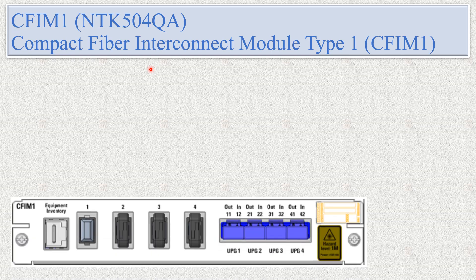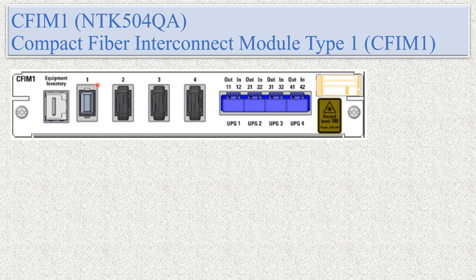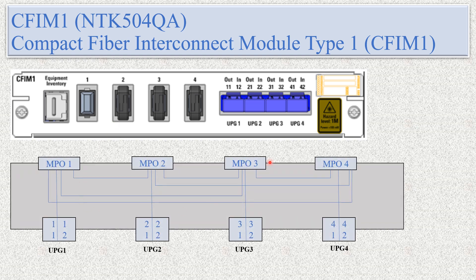You can see here this is the CFM1 physical diagram and this is the CFM1 line diagram. We will discuss in detail how these MPO ports are connected to each other, how another equipment like RLA is used to connect, and how the signal will flow from RLA to MPO ports 1, 2, 3, and 4.